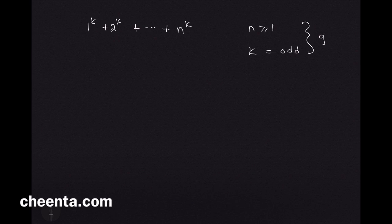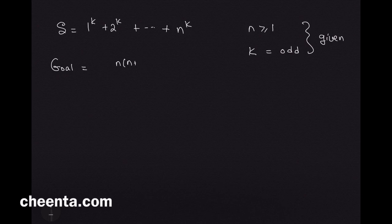Here n is greater than or equal to 1 and k is odd. This is given information. Our goal is to show that this expression, let's call it S. Our goal is to show that this is divisible by n into n plus 1 by 2. That is n into n plus 1 by 2 divides S. This is what we want to show.